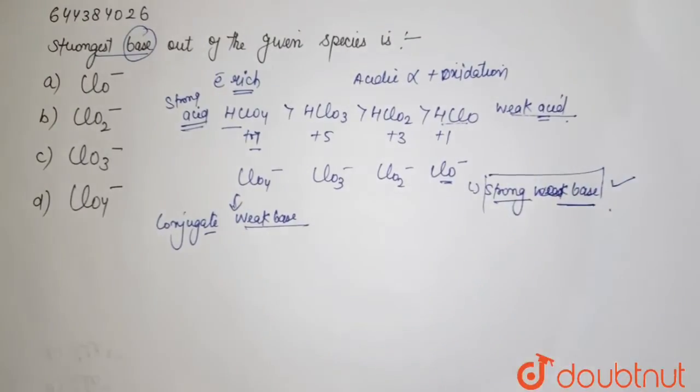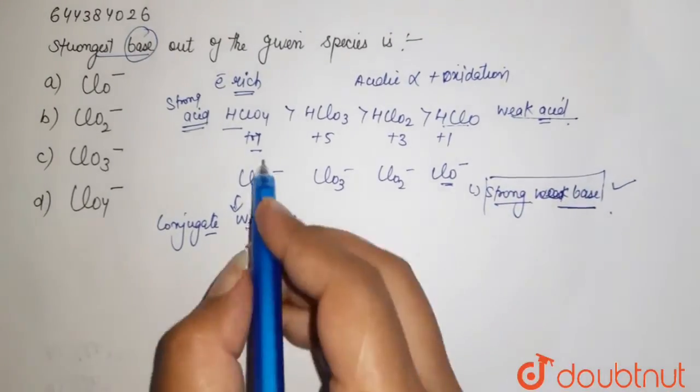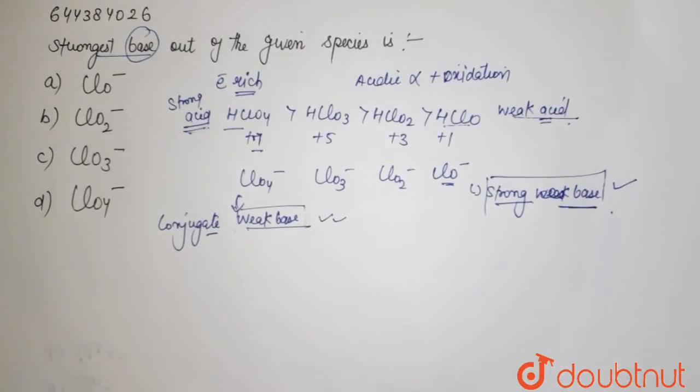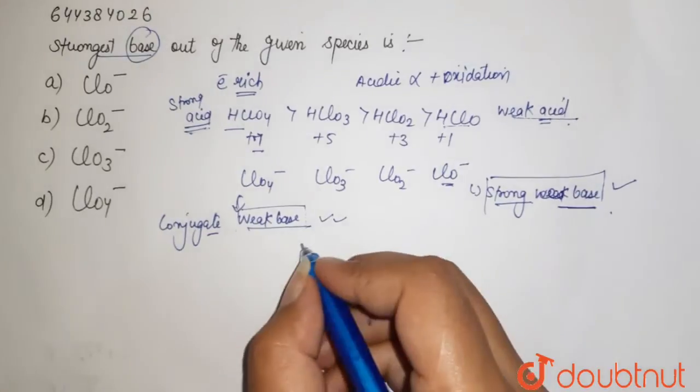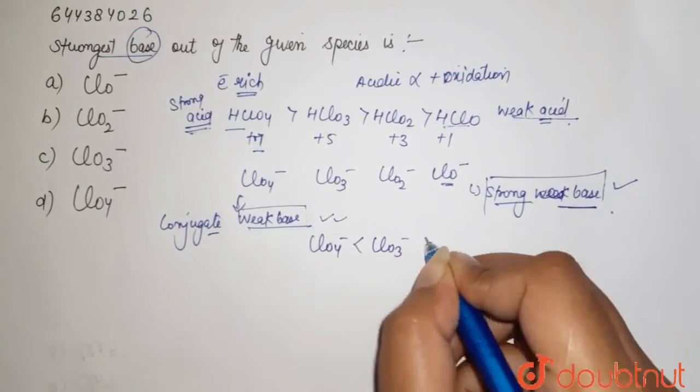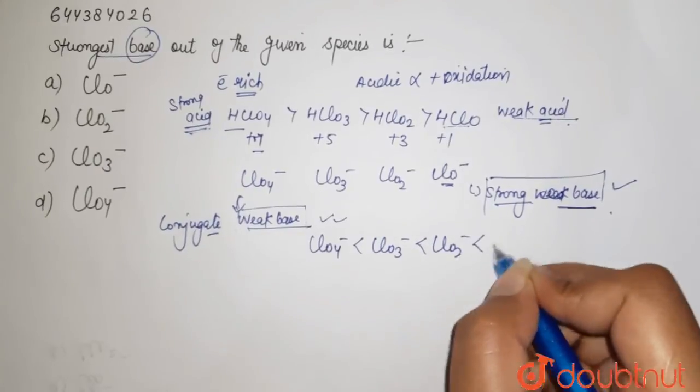So order of your basic strength of your conjugate bases is ClO4-, then this, then this, then this. So we get to know that your ClO- will be the strongest base.